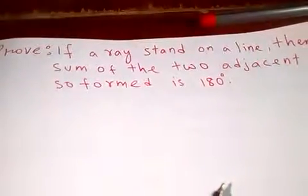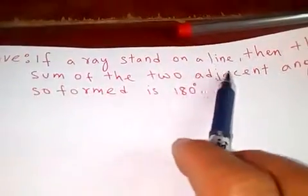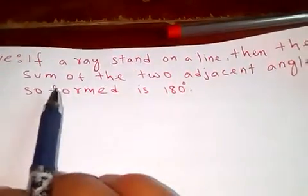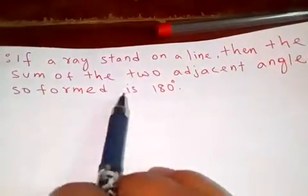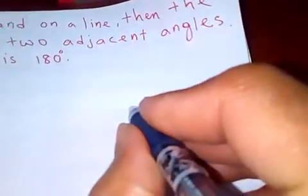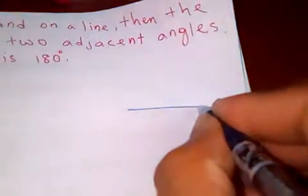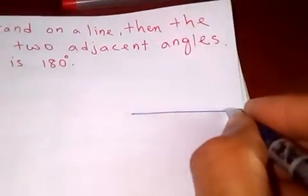Hello friends, today let's prove this: if a ray stands on a line, then the sum of the two adjacent angles so formed is 180. So let's draw the diagram from this. This is a ray, or this is a line.